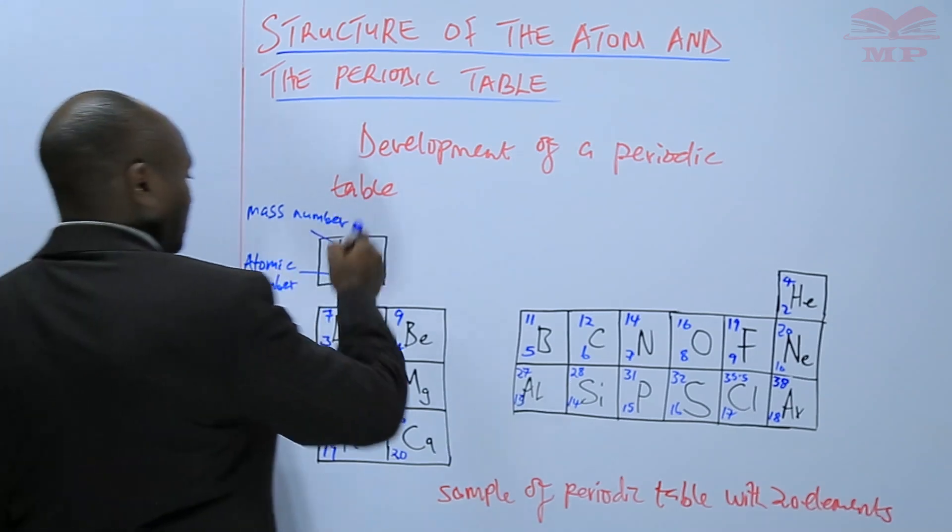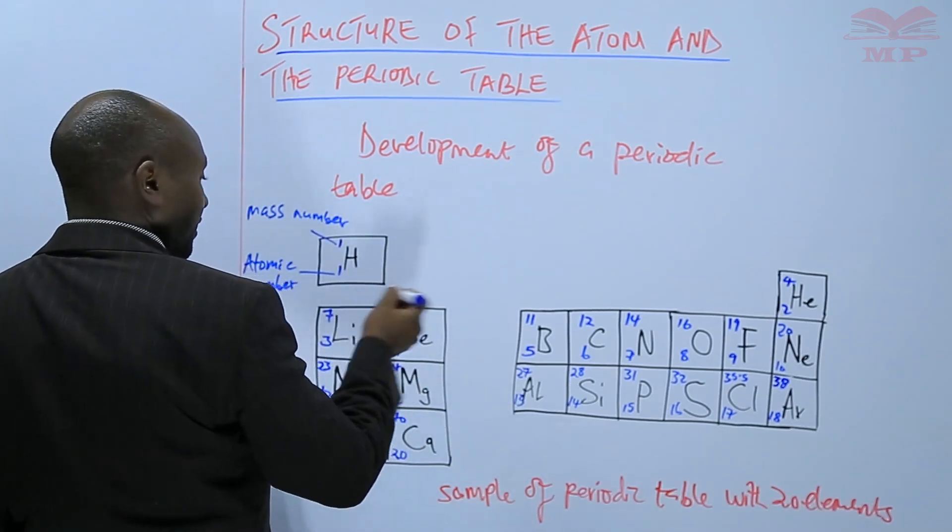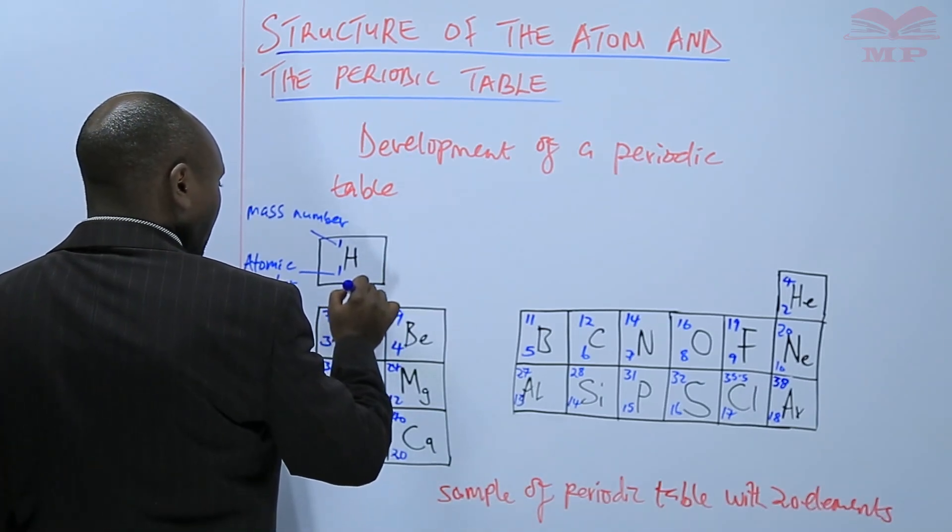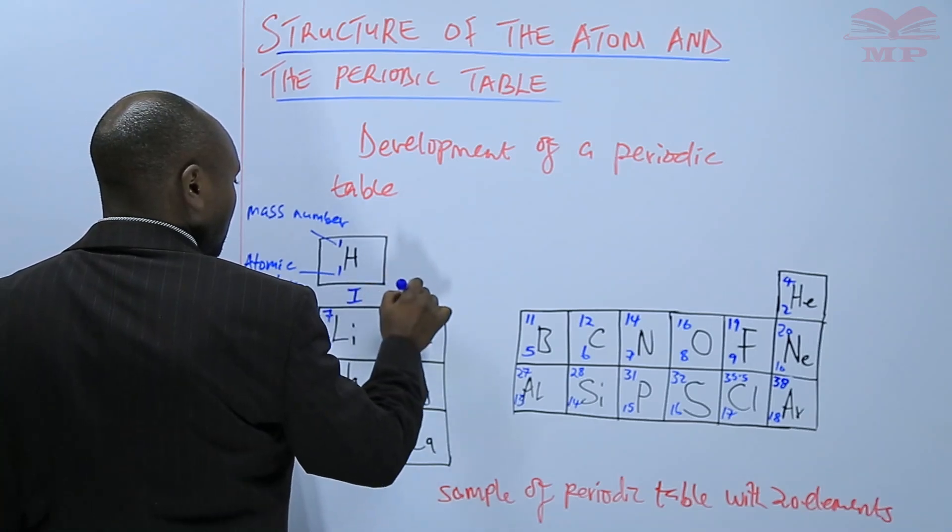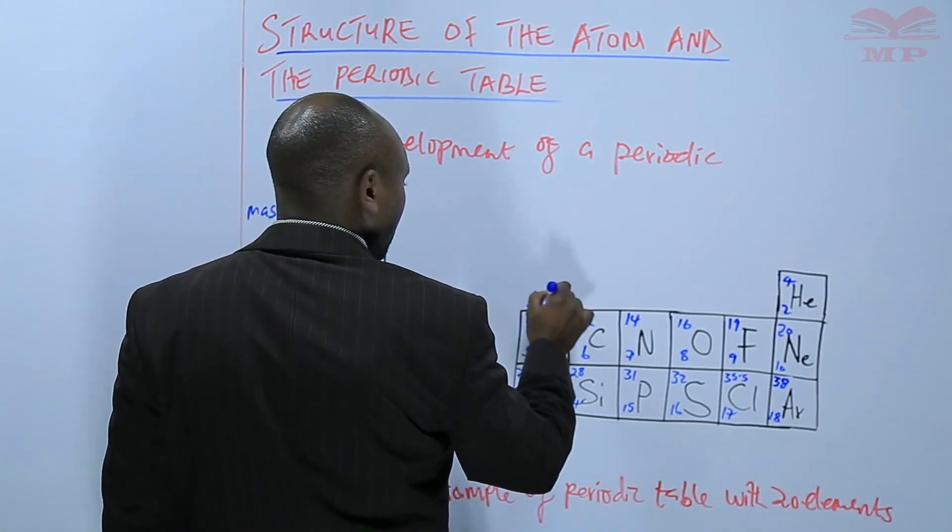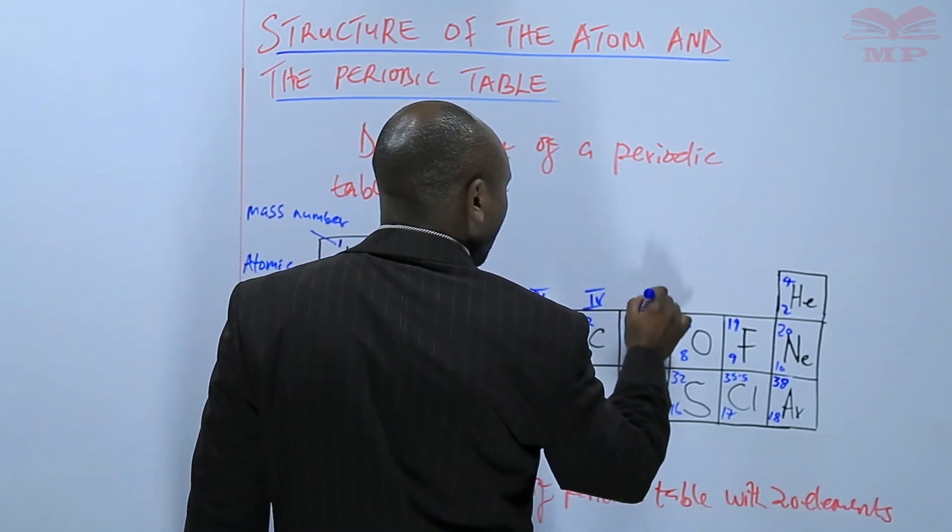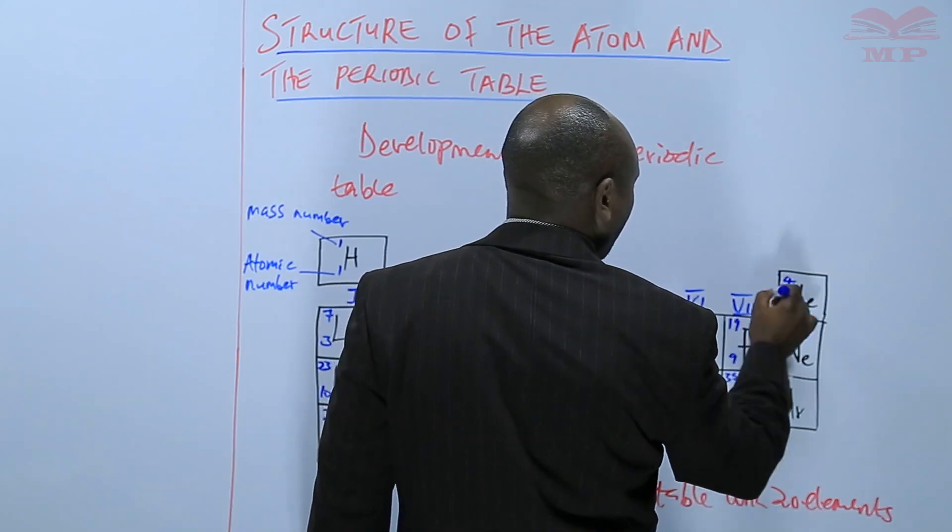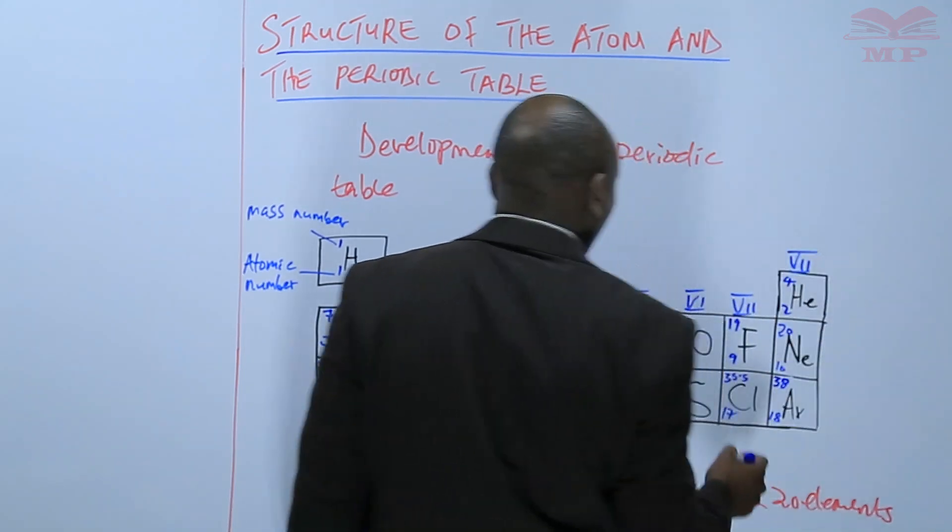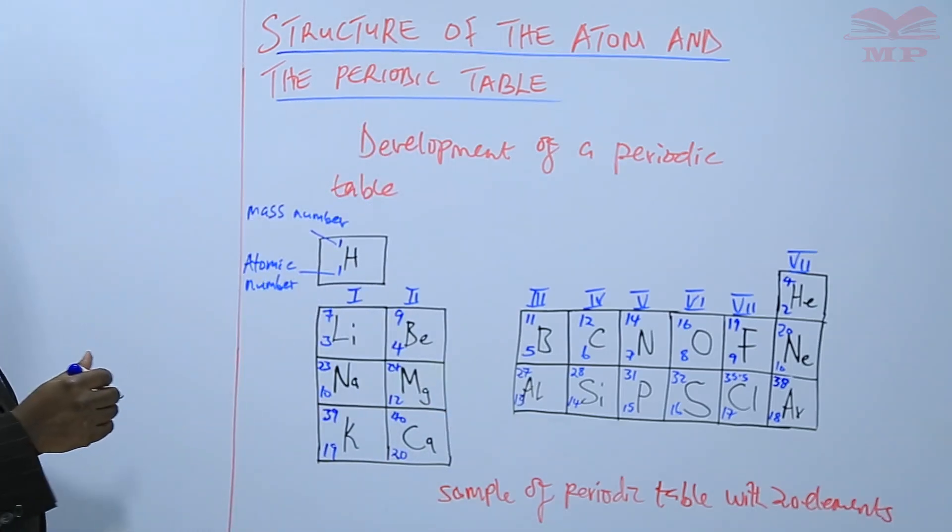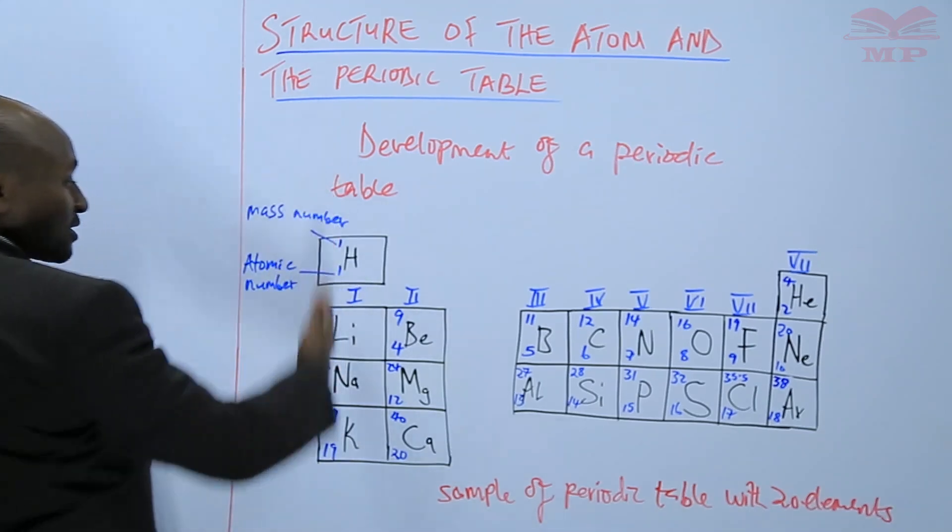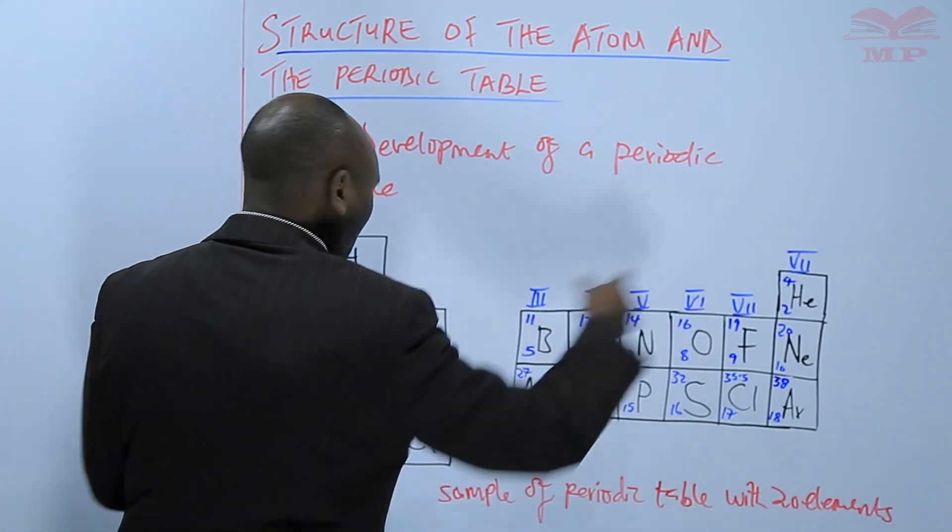Then on top here we write the periods and groups. This is group 1, group 2, group 3, 4, 5, 6, 7, and finally 8. Those groups are written in Roman numbers. The groups are the columns, the first column is group 1, group 2, 3, 4, up to group 8, so these are a total of 8 groups.